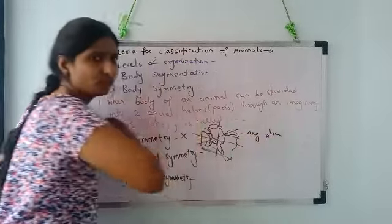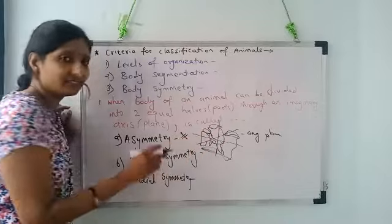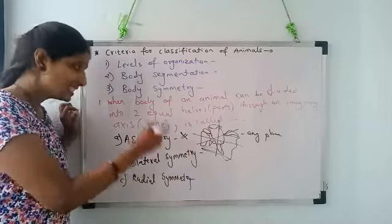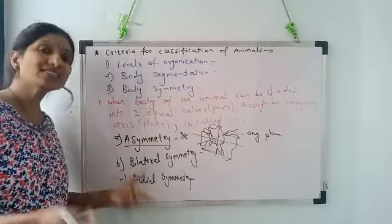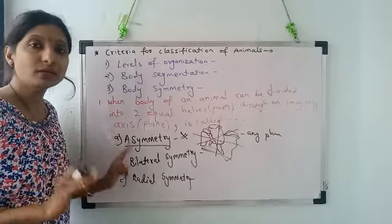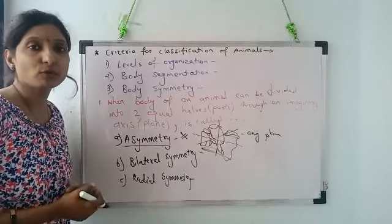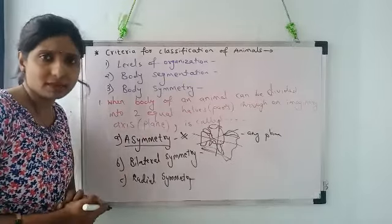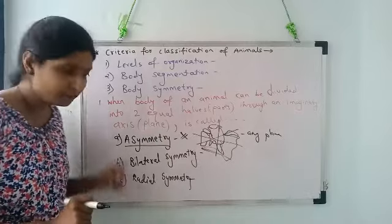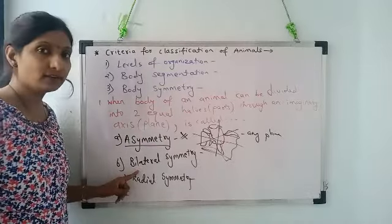Such animal's body is called asymmetric. This means that animal does not show any symmetry of the body. It doesn't get two equal halves in any plane.